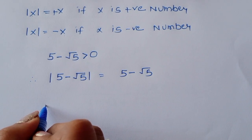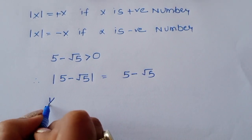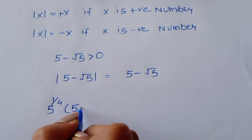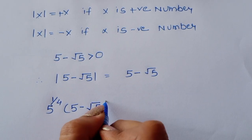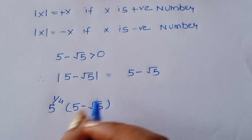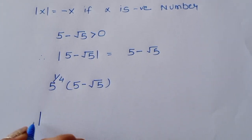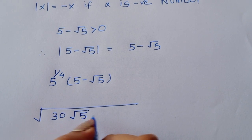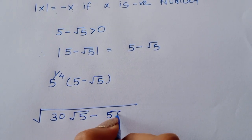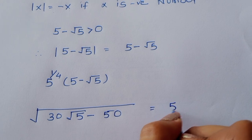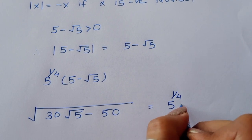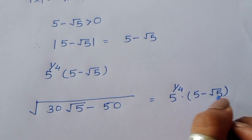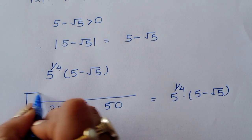Therefore, the value of the given expression — square root of 30 times square root of 5 minus 50 — is equal to 5^(1/4) times (5 - √5). This is our final answer, and this is positive.